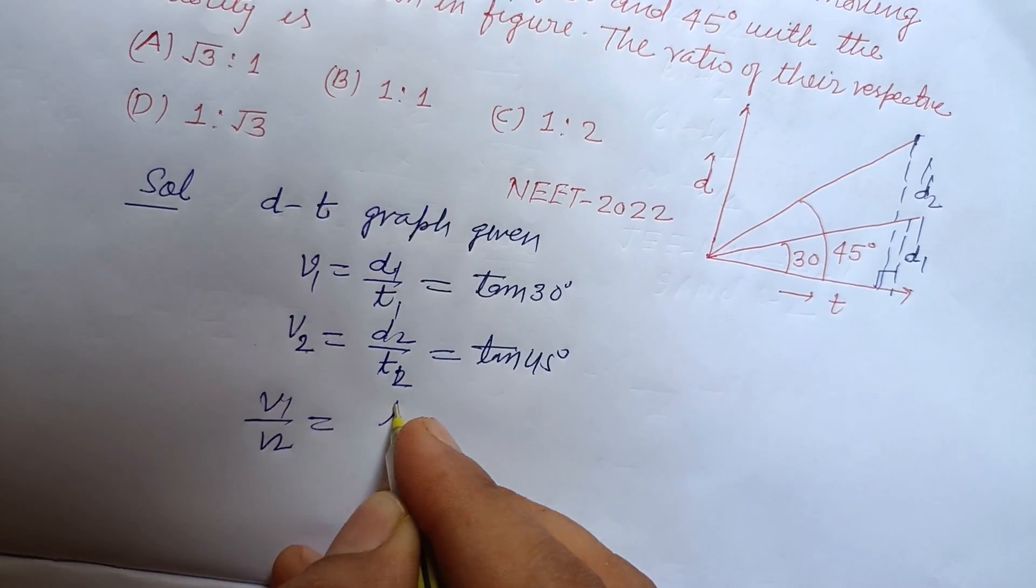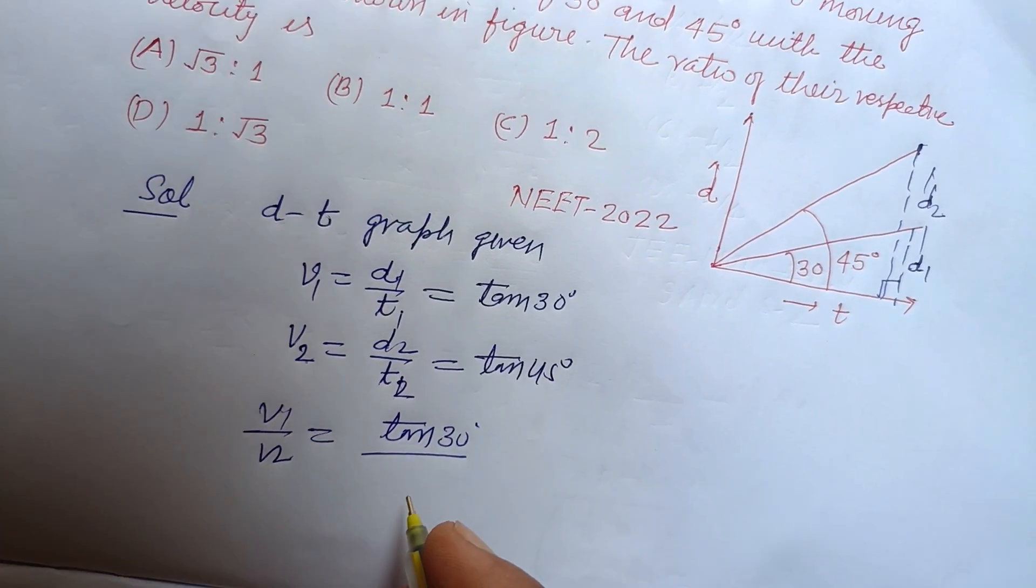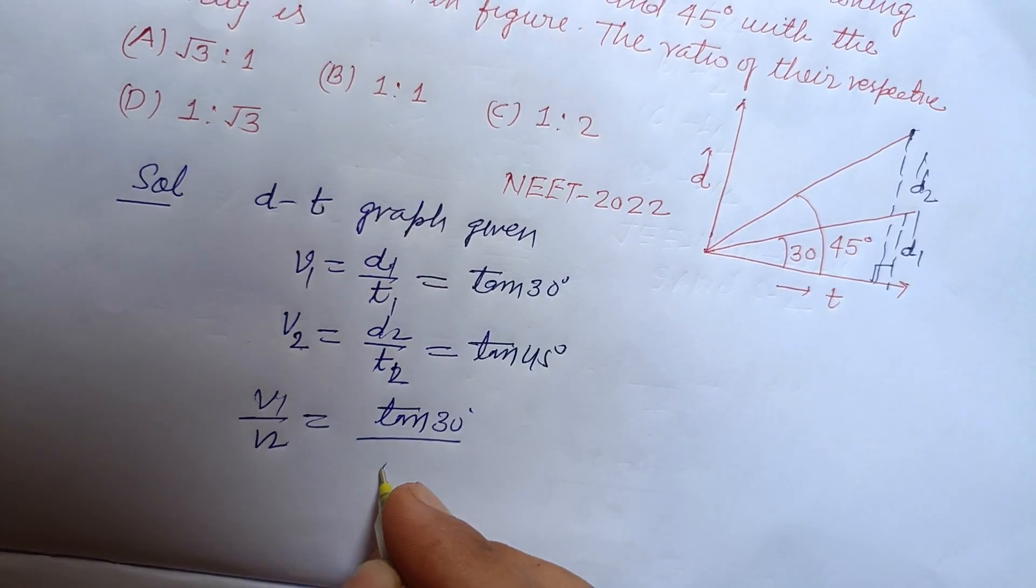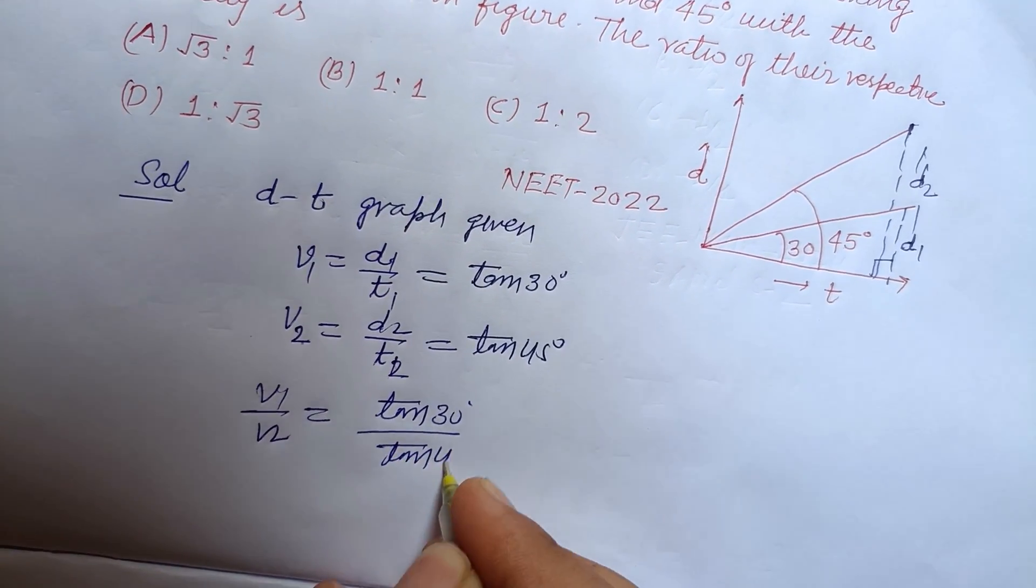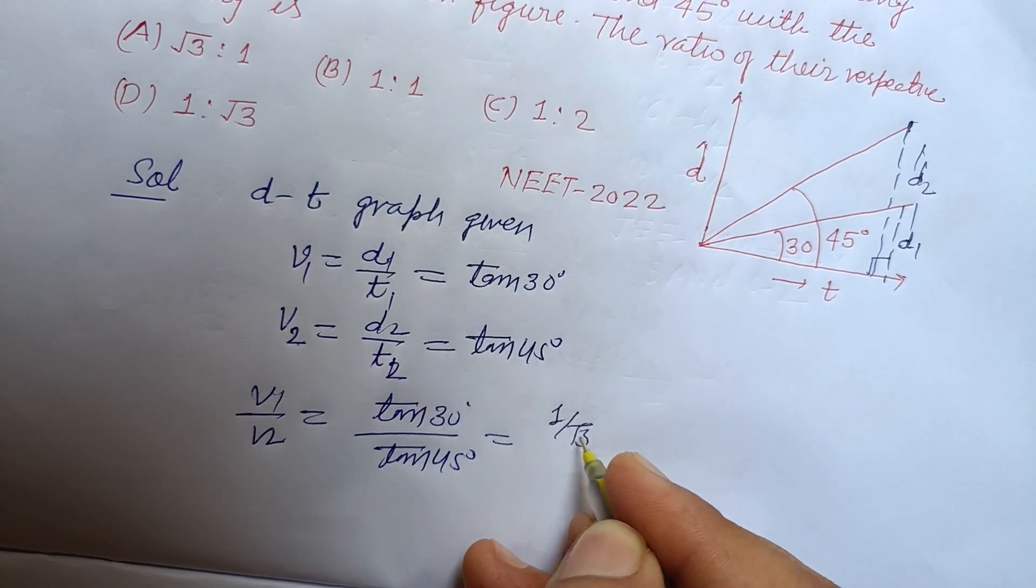Is nothing but the ratio of their gradient or their tangents. So tan 45, tan 30 is 1 upon root 3, and tan 45 is 1.